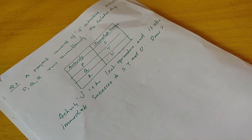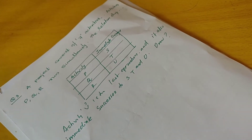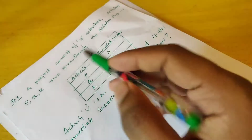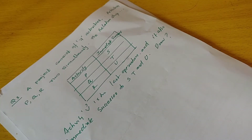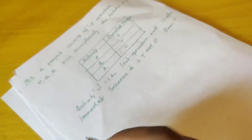This is the question: A project consists of 7 activities. This project consists of 7 activities. How many activities are there?